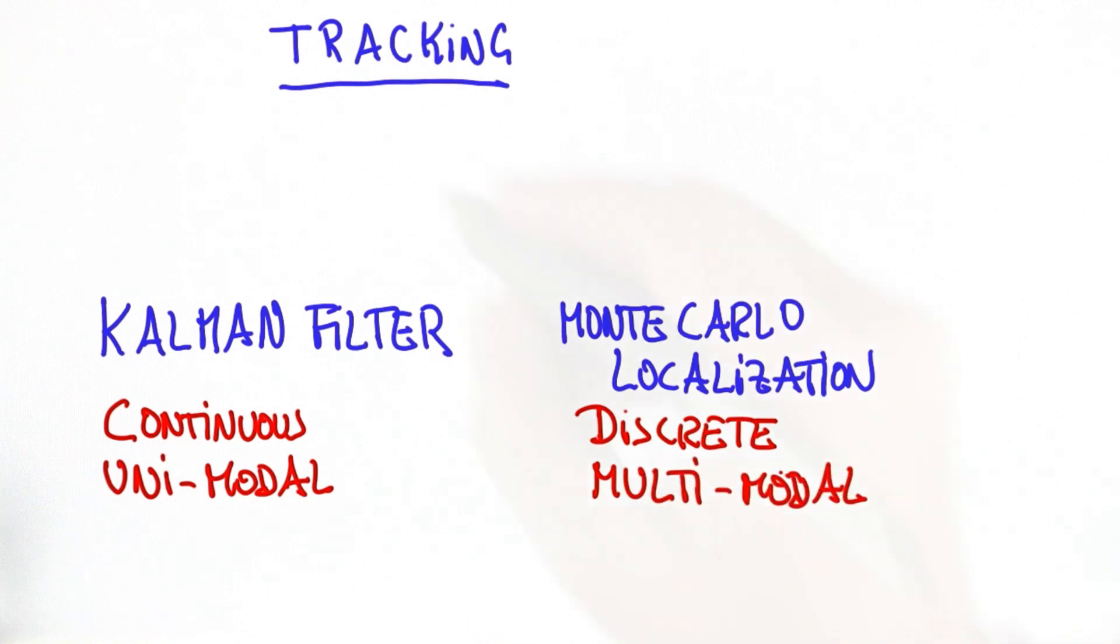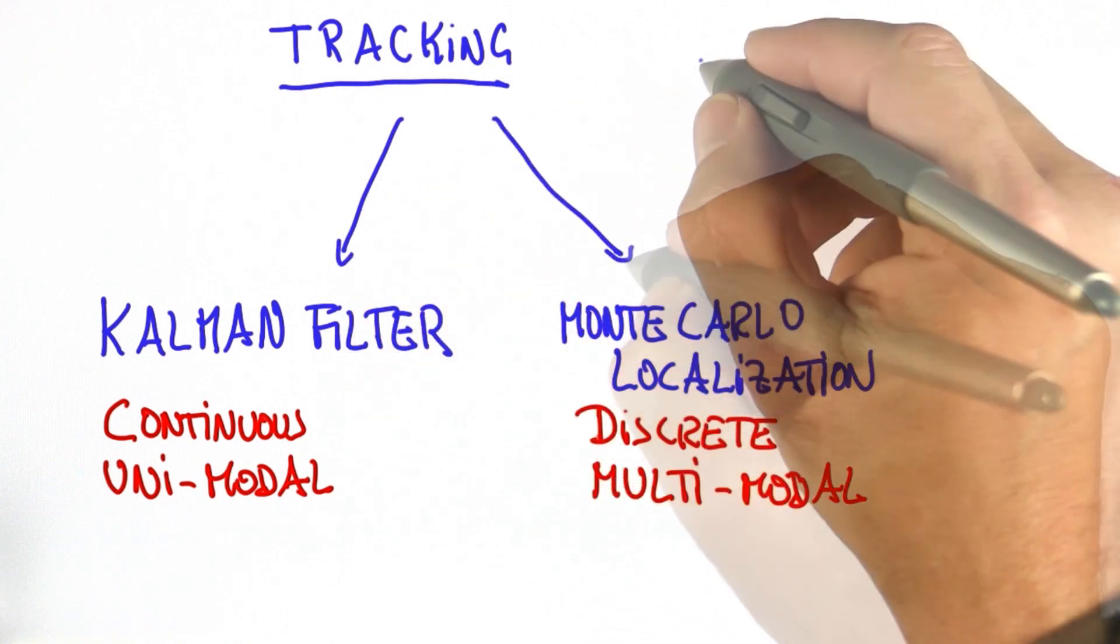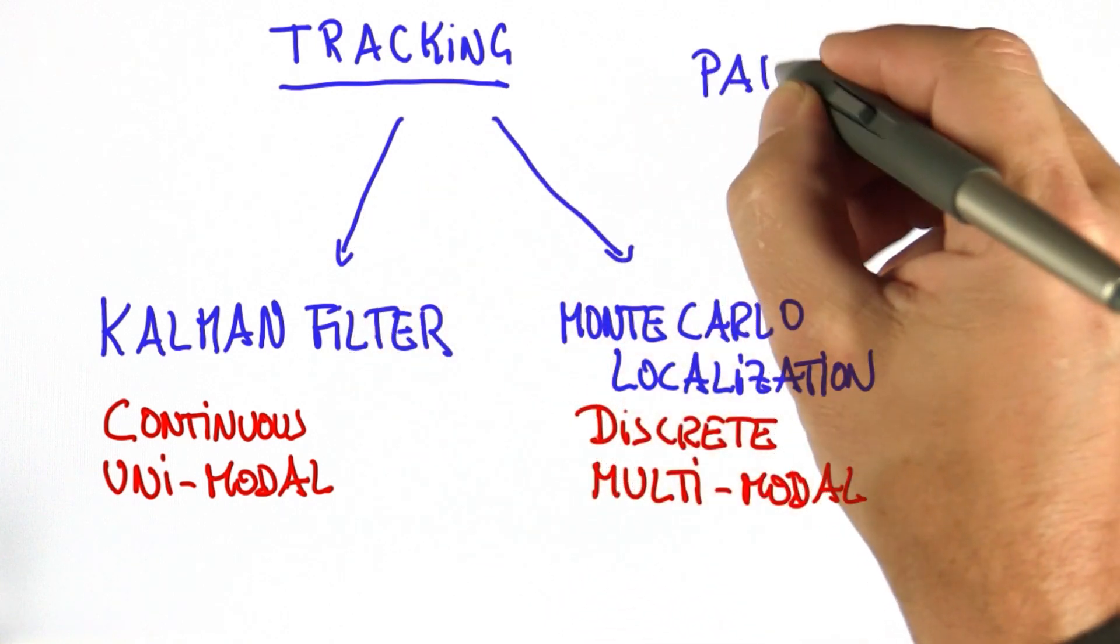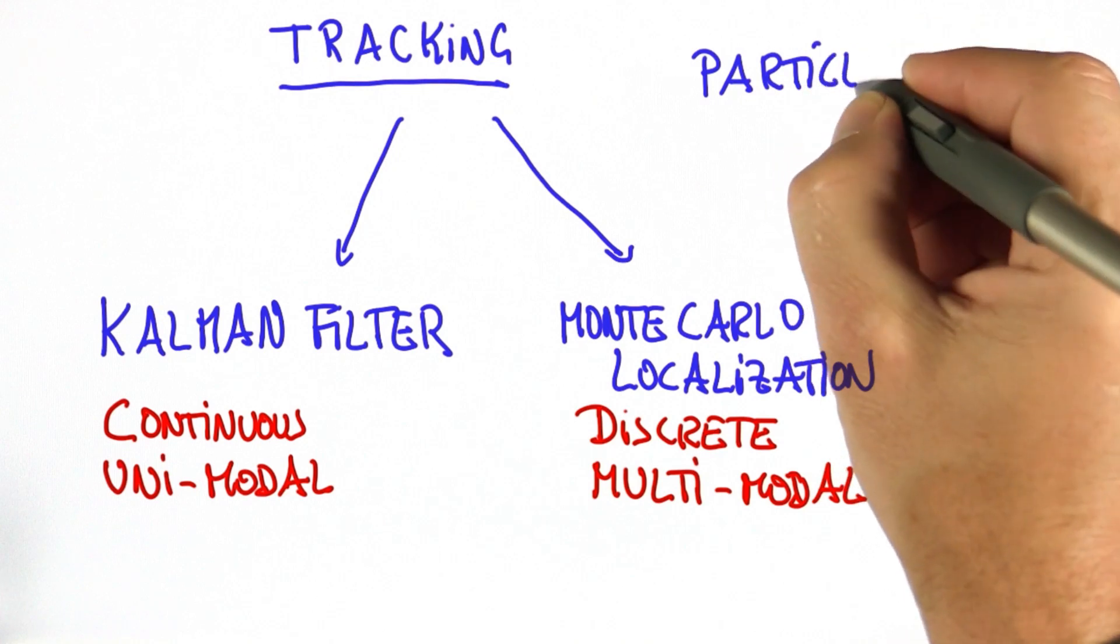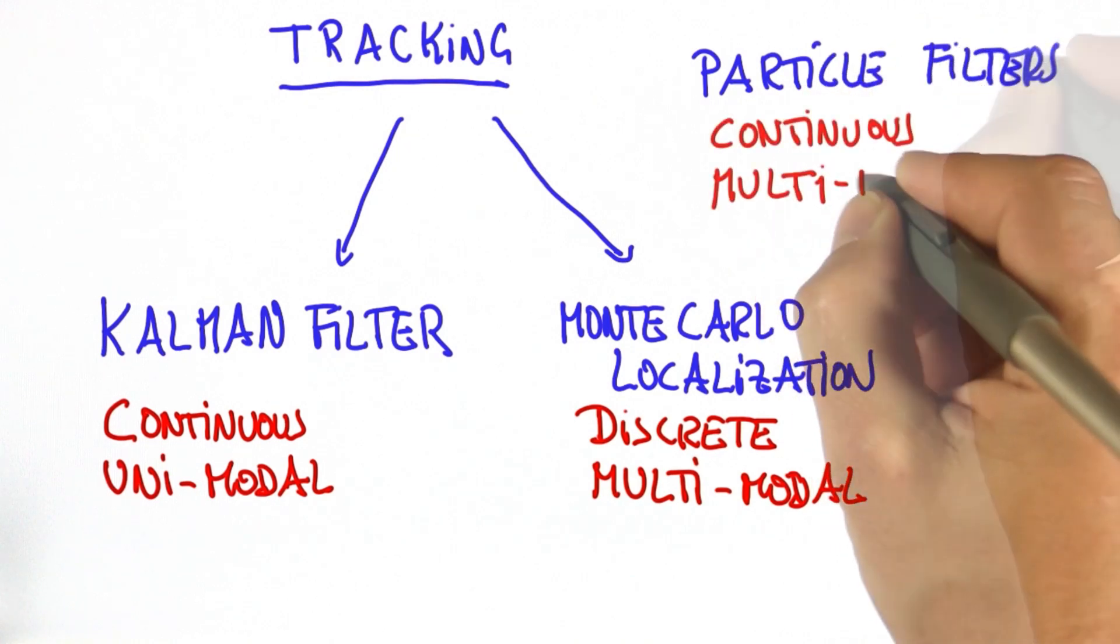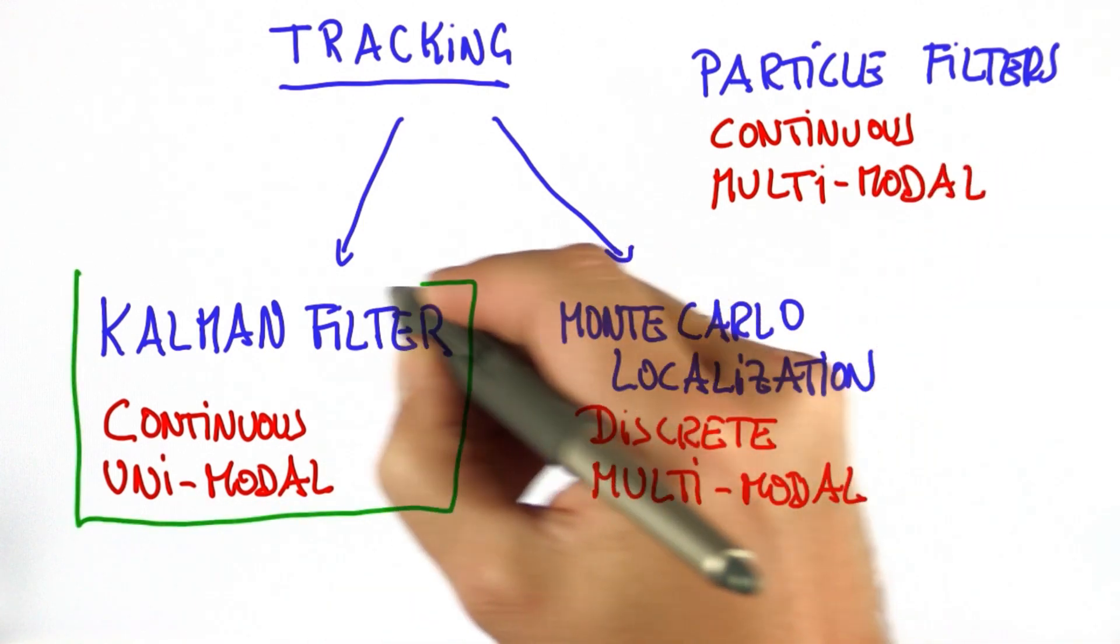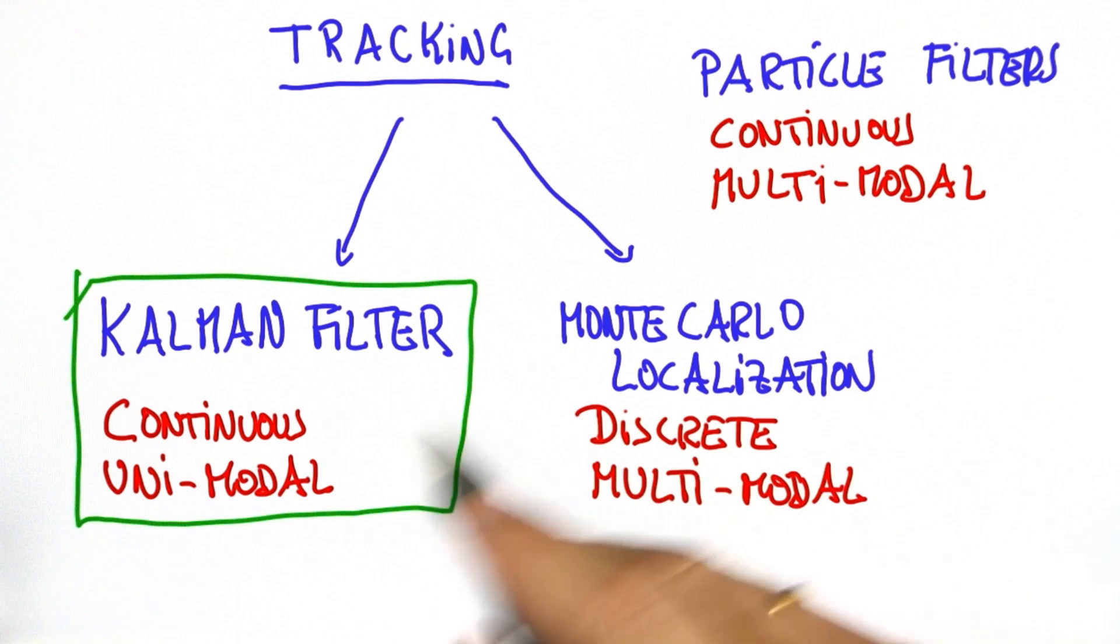Both of these techniques are applicable to robot localization and tracking other vehicles. In fact, in a later class, we're going to learn about particle filters, which are yet another way to address the same problem. And indeed, they're actually continuous and multimodal. But for the time being, let's look into Kalman filters and ignore these other two families of methods.